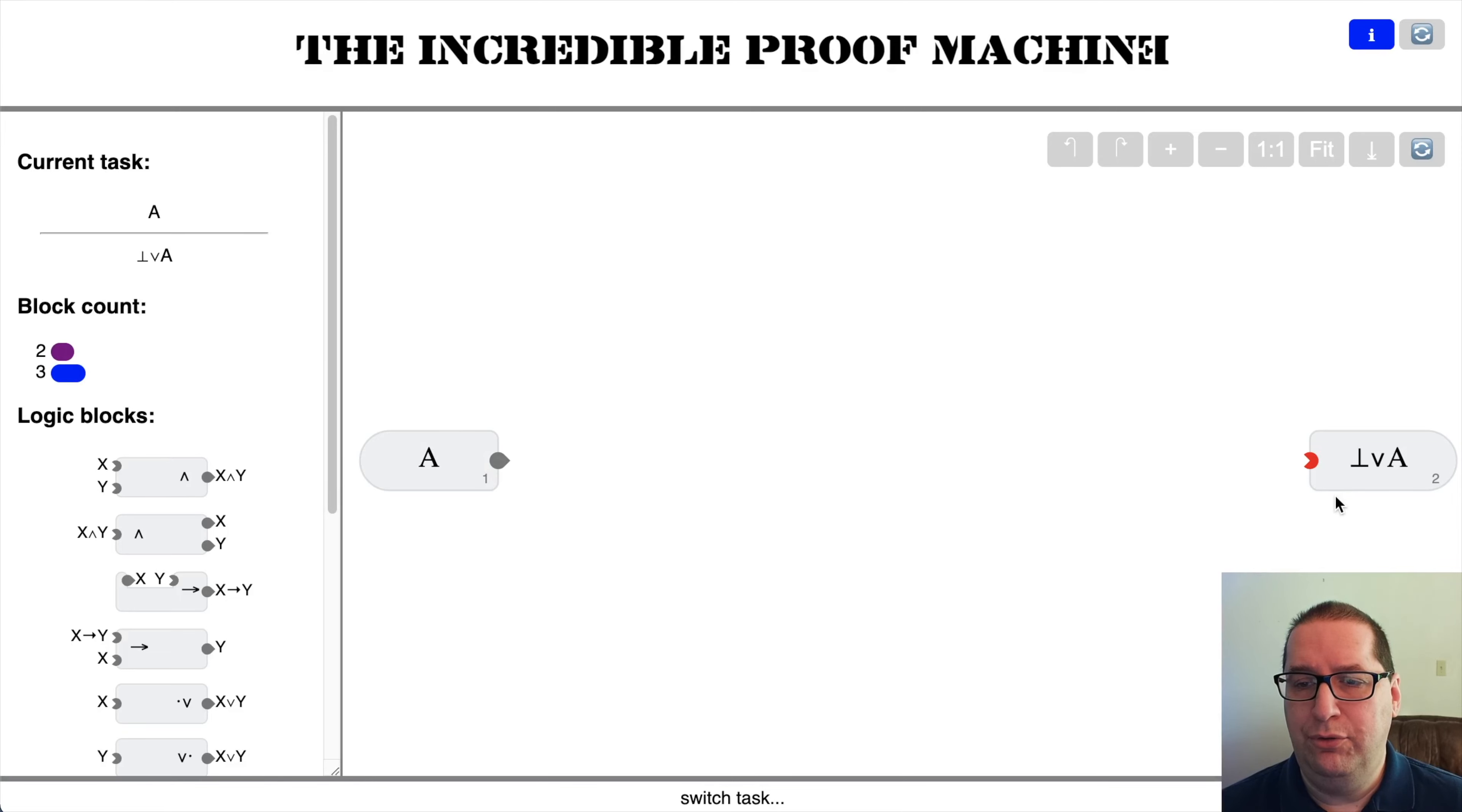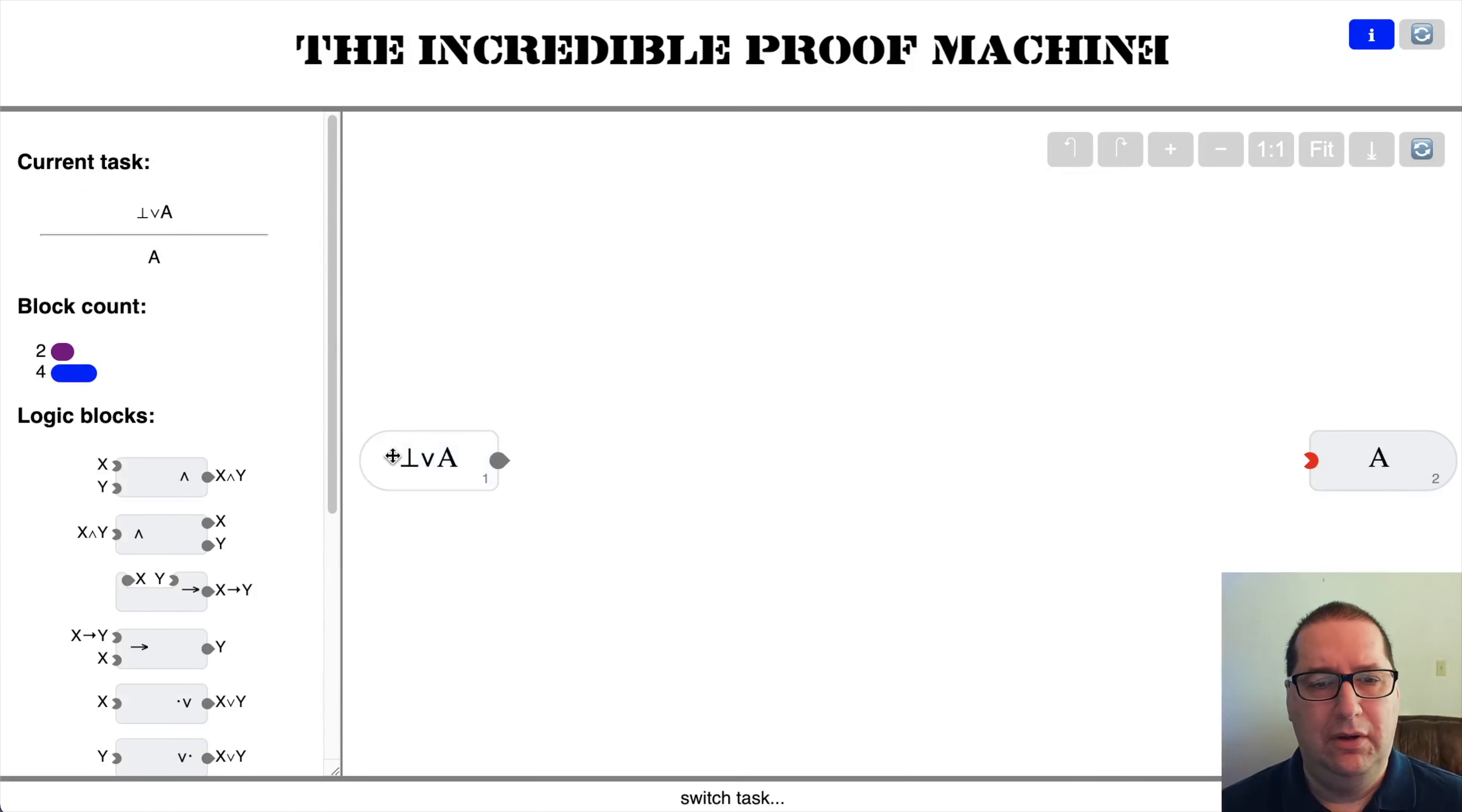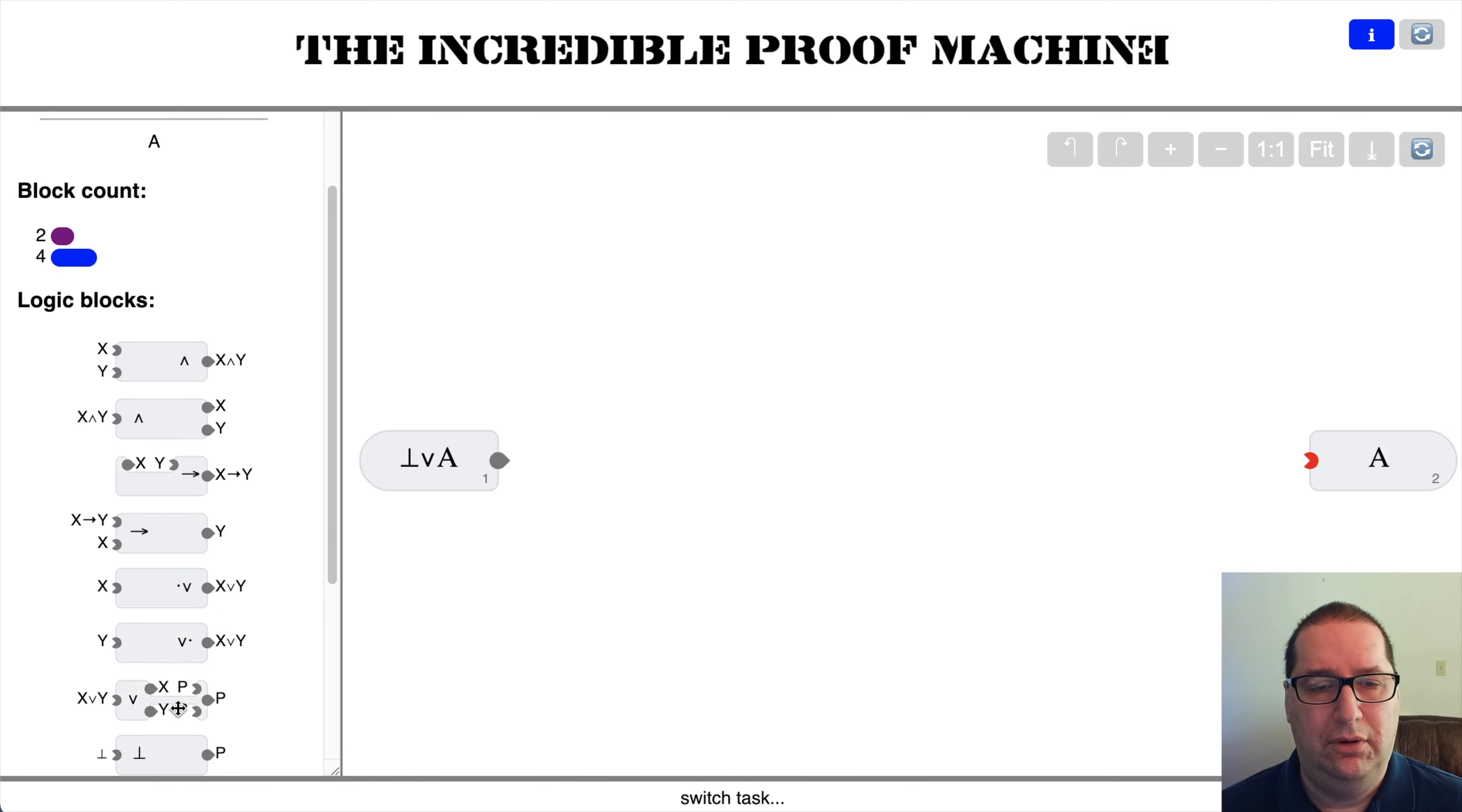Given A, prove false or A. I think we can simply use a right or introduction. Given absurd or A, prove A. So here we need to use disjunction elimination, our favorite long operator.